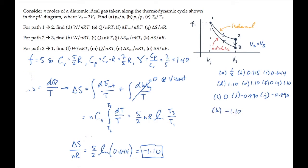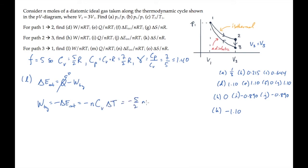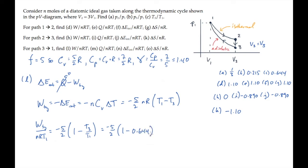Now let's solve the set of questions dealing with the adiabatic path from 3 to 1. The first thing we're asked to find is the normalized work. For an adiabatic process, Q is 0, so the work equals minus the change in internal energy, which is minus nCv delta T. Substituting the final minus initial temperatures and normalizing gives a factor of 1 minus T3 over T1. Using our answer to Part C, we calculate an answer of negative 0.890. Part M asks for Q normalized. The process is adiabatic, so Q is 0.